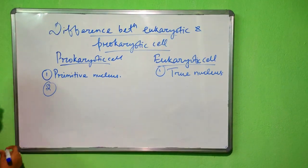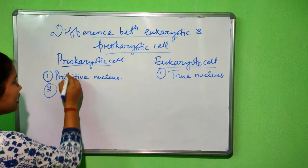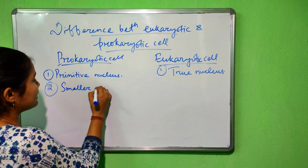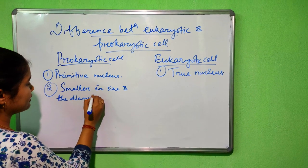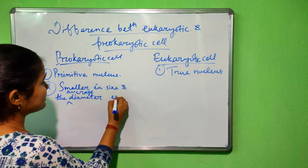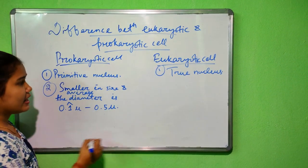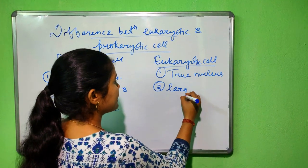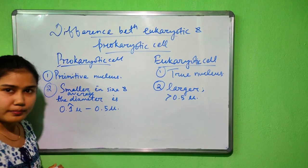The second point is regarding cell size. Prokaryotic cells are smaller in size, with an average diameter of generally 0.1 micron to 0.5 micron. Whereas eukaryotic cells are larger in size, with an average diameter usually greater than 0.5 micron.